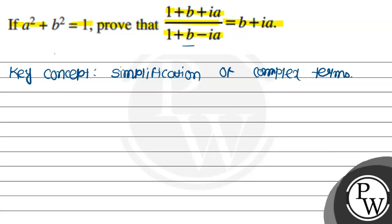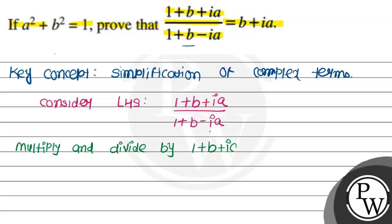Now, consider this LHS part which is 1 plus b plus ia, divided by 1 plus b minus ia. To simplify it in complex form, we need to multiply and divide. So, multiply and divide by 1 plus b plus ia.